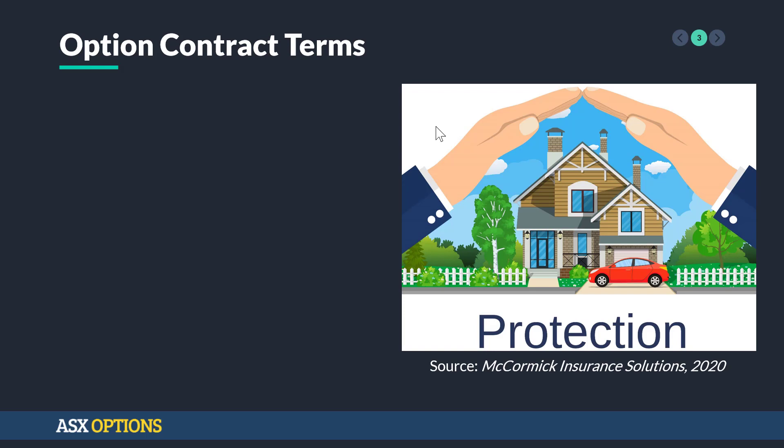We have the option contract terms and we're going to go through them one by one. The first is the premium. As with insurance, a premium must be paid to buy the options contract. This is an amount that's negotiated between the buyer and the seller, and this premium is kept by the insurer whether the house burns down or not.